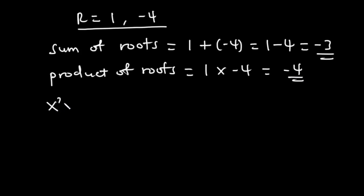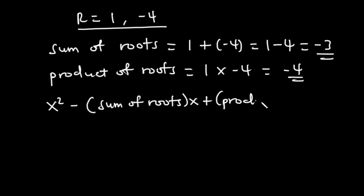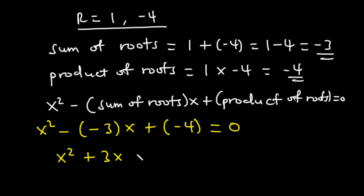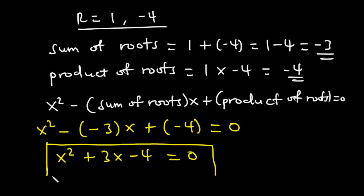Using the formula x squared minus sum of roots times x plus product of roots equals zero, we have x squared minus negative 3 times x plus negative 4 equals zero. So we have x squared plus 3x minus 4 is equal to zero. The quadratic equation whose roots are 1 and negative 4 is x squared plus 3x minus 4 equals zero.